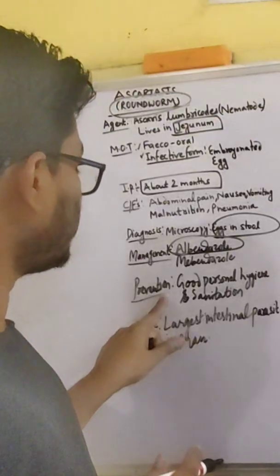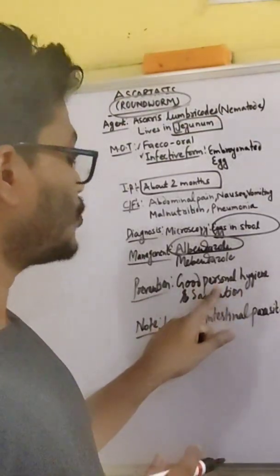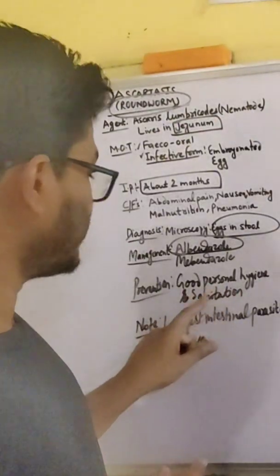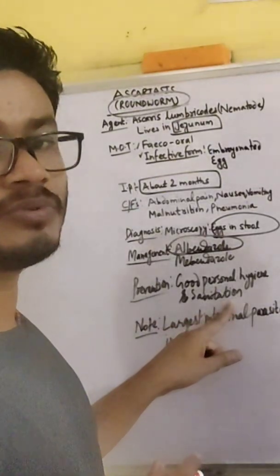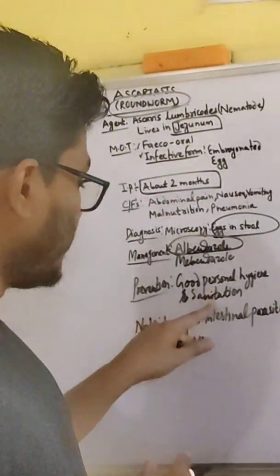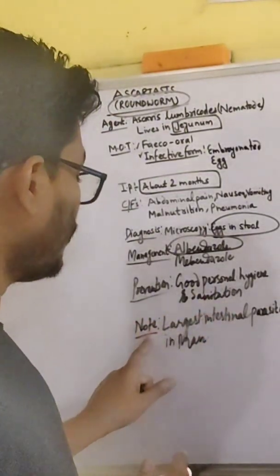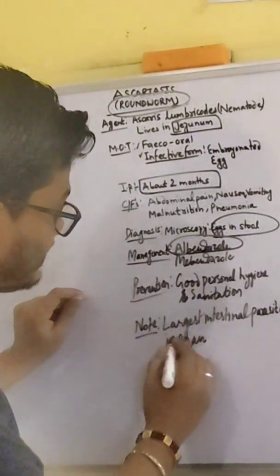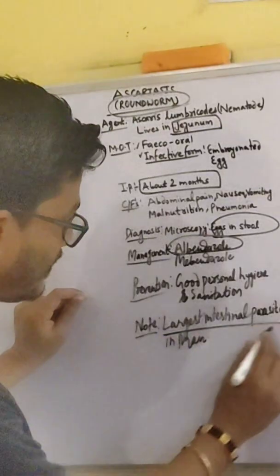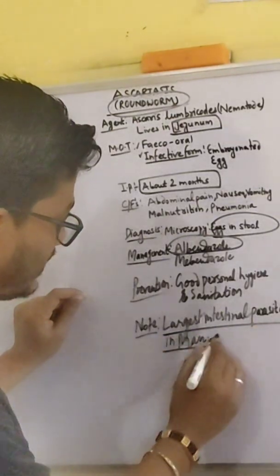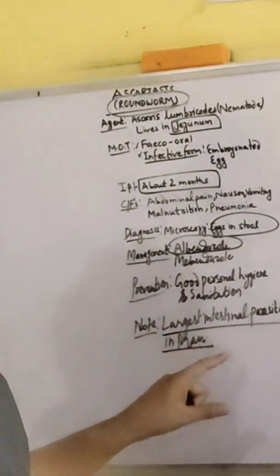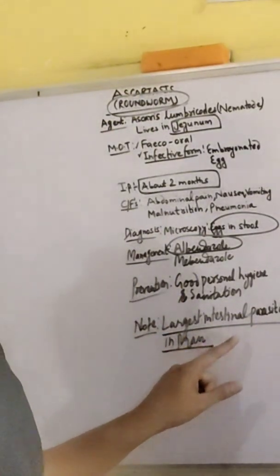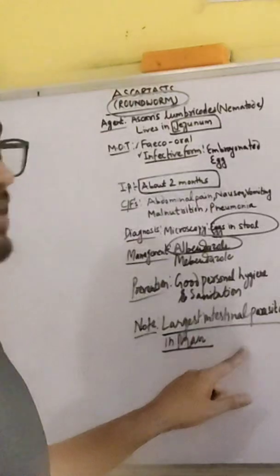For prevention, good personal hygiene and sanitation are important measures. Also note that Ascaris lumbricoides is one of the largest intestinal parasites in man.